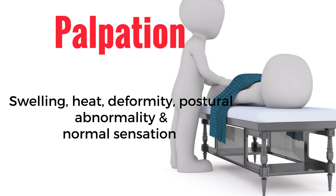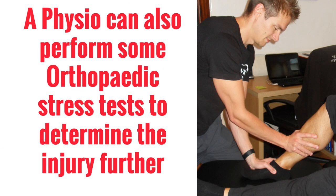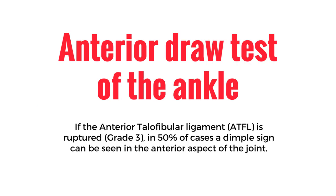Check for normal sensation in case of damage to nerves or circulation. Check range of motion of the joints — this will be limited and painful. For a lateral ligament sprain, inversion will be the worst motion. According to POFA 2001, a physio can also perform orthopedic stress tests to determine the injury further. An example is the anterior drawer test of the ankle. If the anterior talofibular ligament is ruptured — which is a grade three tear — in 50% of cases a dimple sign can be seen in the anterior aspect of the joint.